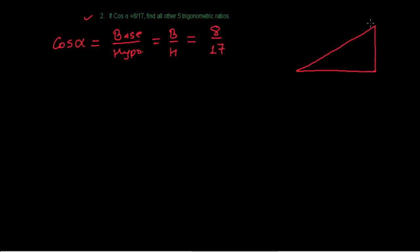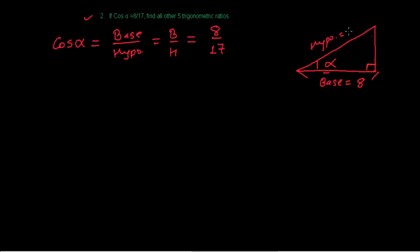This triangle has a 90-degree angle, and I'm labeling one of the other angles as alpha. The side on which the angle is seated is the base, so base equals 8. The longest side is the hypotenuse, which equals 17 centimeters.